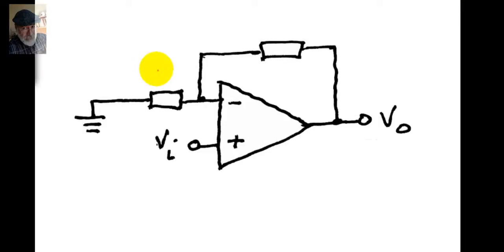This is a configuration that we have seen in the previous term. The voltage gain of this amplifier, which is no other than the non-inverting amplifier, depends exclusively on the values of the two resistors R1 and R2.